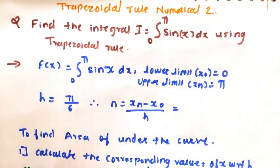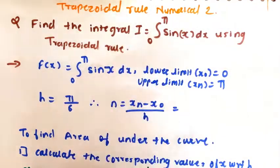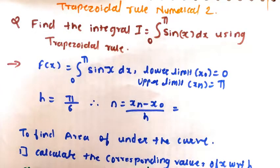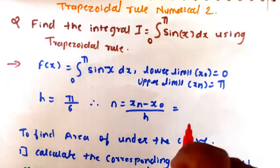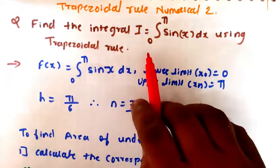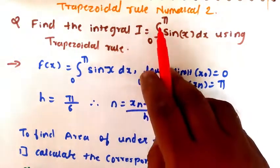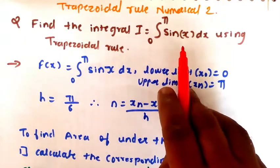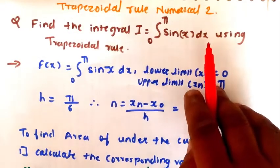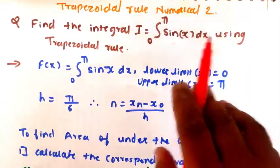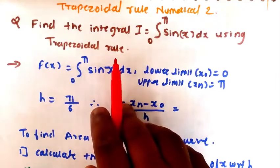Hello everyone. In this video we are going to see the trapezoidal rule numerical. We have to find out the integral I, which is the integration from 0 to π of sin(x) dx using the trapezoidal rule.